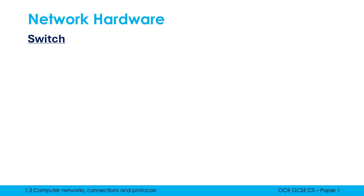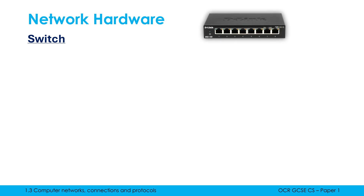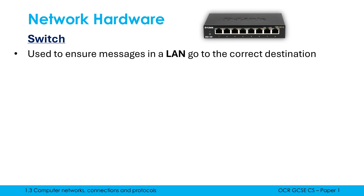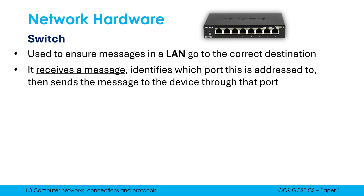A final bit of hardware you probably haven't come into contact with is a switch — not like a light switch, but a box with lots of ethernet ports. Similar to a router but subtly different, a switch is used to ensure messages in a LAN go to the correct destination. Unlike a router handling WAN messages, a switch handles messages within a LAN. The switch receives a message, and since all devices are plugged into its ethernet ports, there isn't really a route to calculate.